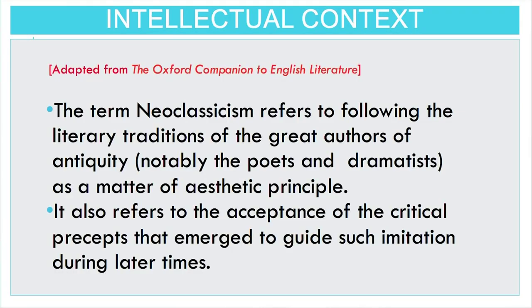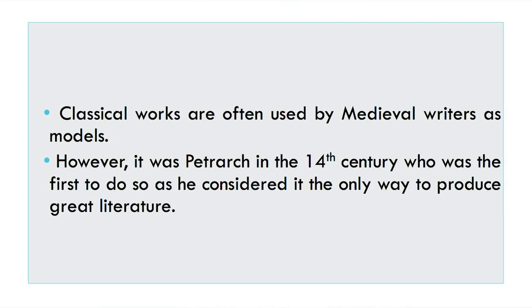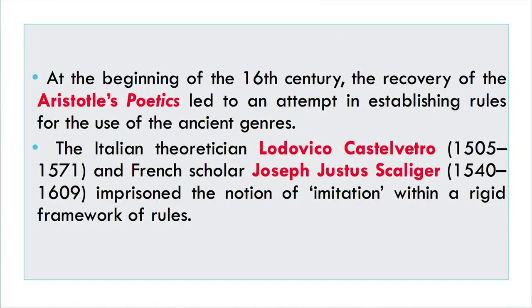A useful way one can adopt is to specify the salient attributes of literary theory and practice used and shared by a number of important Neoclassical writers, which also serve to distinguish them from many outstanding writers of the Romantic period. The term Neoclassical refers to following the literary traditions of the great authors of antiquity, notably the poets and dramatists, as a matter of aesthetic principle. It also refers to the acceptance of critical precepts that emerged to guide such imitation. Medieval writers often used classical works for models; however, it was Petrarch in the 14th century who was the first to do so as he considered it the only way to produce great literature. Literary genres like epic, eclogue, elegy, ode, satire, tragedy, comedy, epigram, etc. of ancient times started becoming extensively popular.